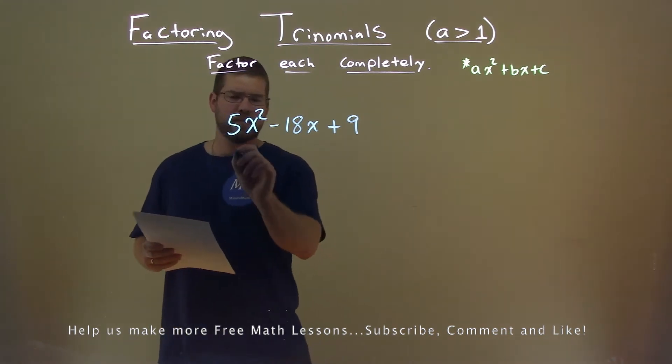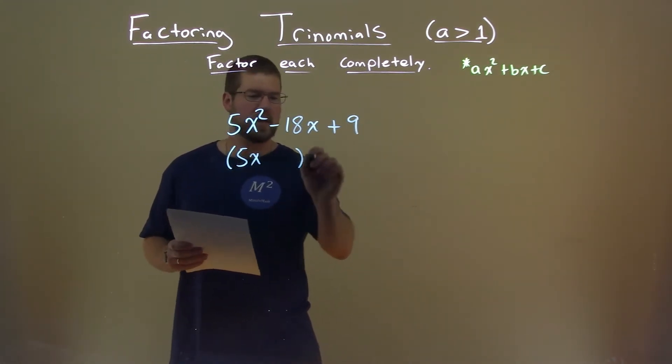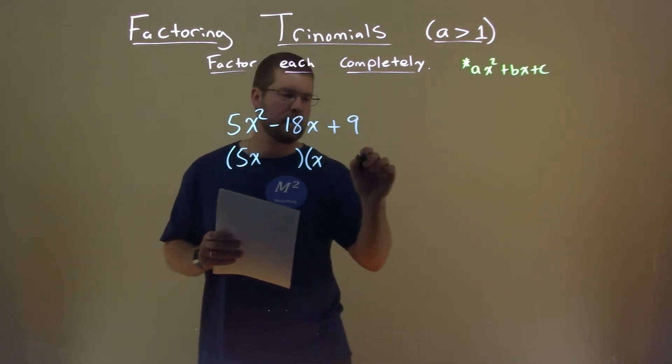Well, our a value is prime, so we know it's going to be in some form of 5x plus or minus something, times x plus or minus something else.